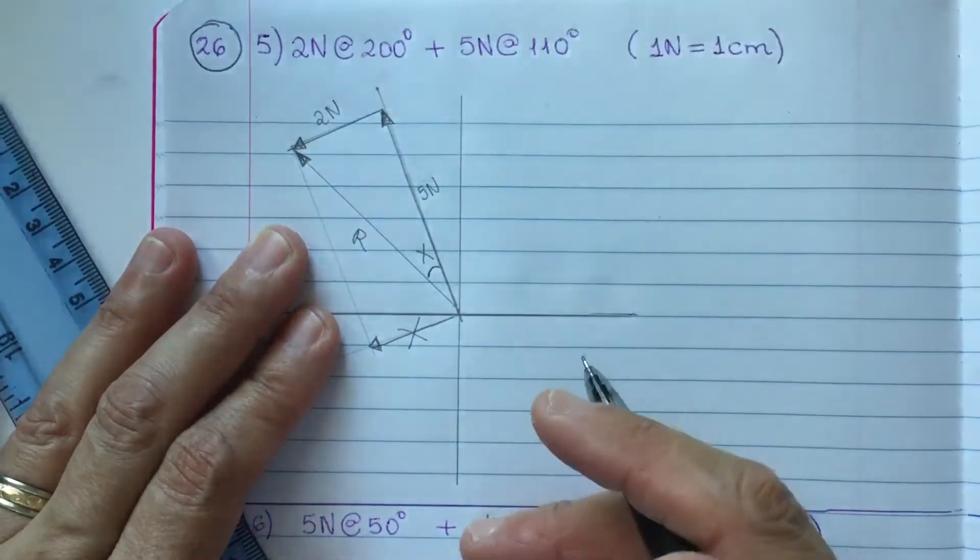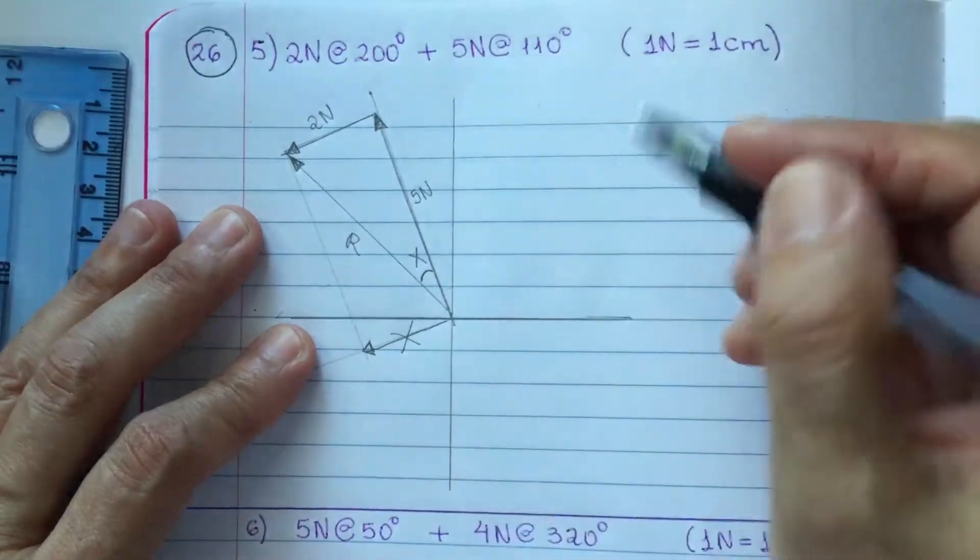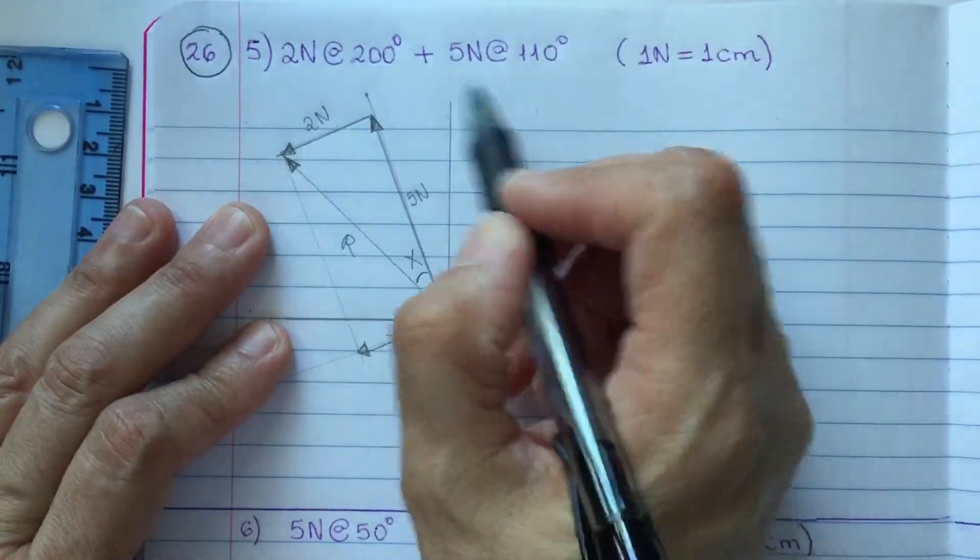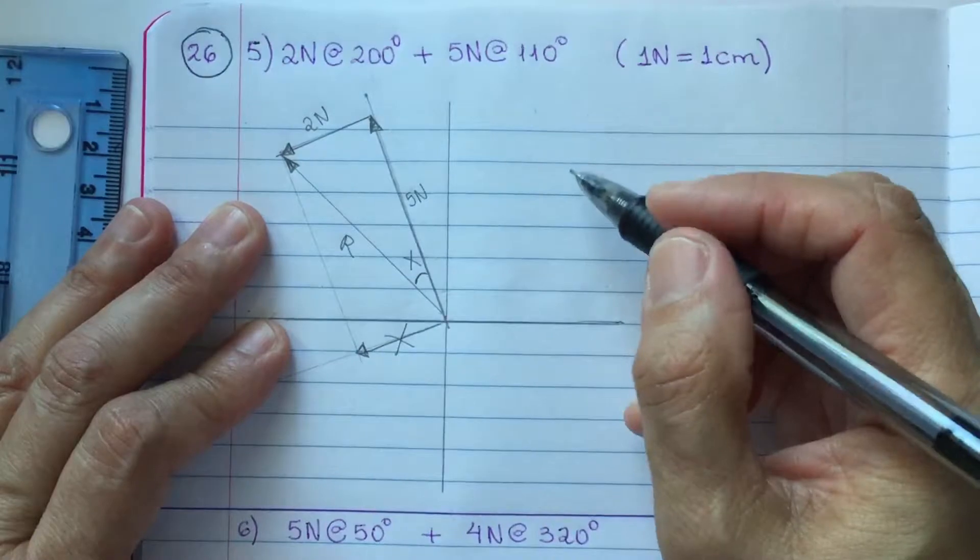Good. Now, let's go for the process of finding the resultant of the vector addition and the direction of the resultant.